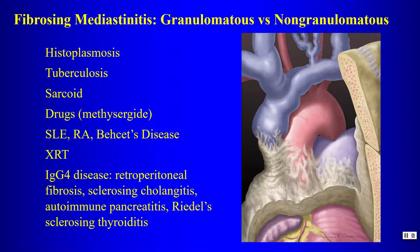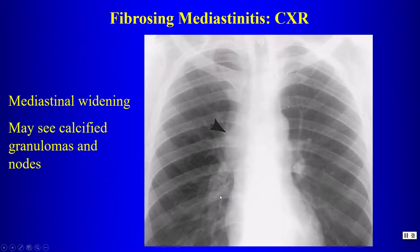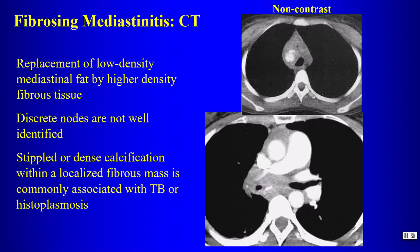Fibrosing mediastinitis most commonly obstructs the superior vena cava. Pulmonary veins can also be obstructed, causing asymmetric interstitial edema; hemoptysis is another complication. On chest radiograph the widening is non-specific, but if from granulomatous disease such as histoplasmosis or sarcoid, calcification of lymph nodes may be seen.